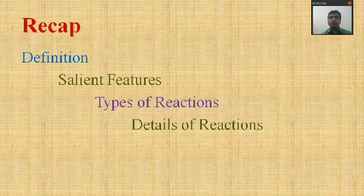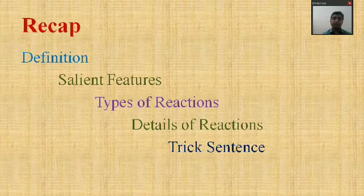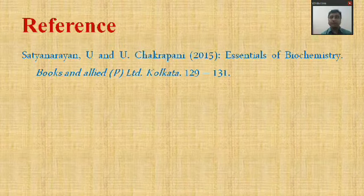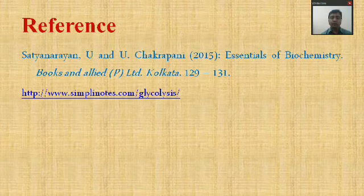We also learned the mnemonic sentence: 'Goodness gracious, father Franklin did go by picking pumpkins to prepare pies' — where 'pies' refers to a type of pastry or cake. Finally, references: I used the book by authors Satya Narayan and Chakrapani, titled 'Essentials of Biochemistry,' pages 129 to 131. For various reaction details I also used the website simplenotes.com. That concludes glycolysis — thanks.